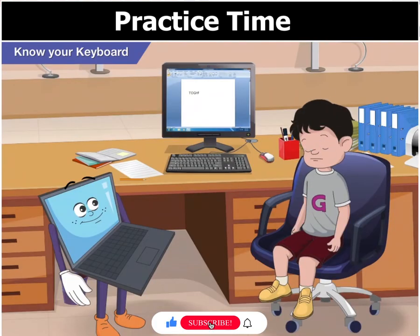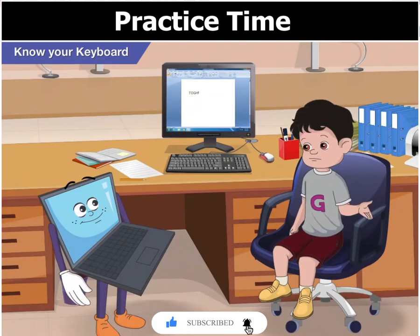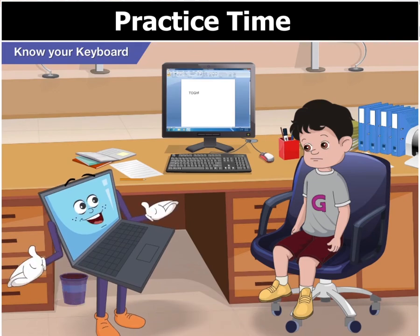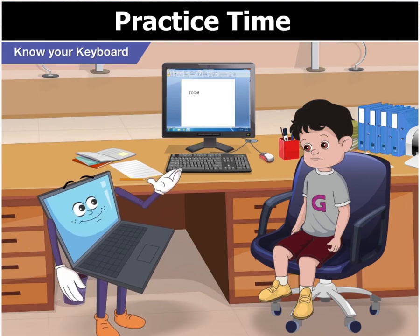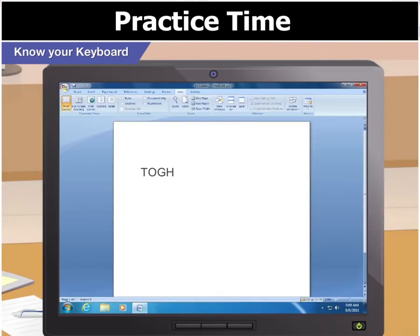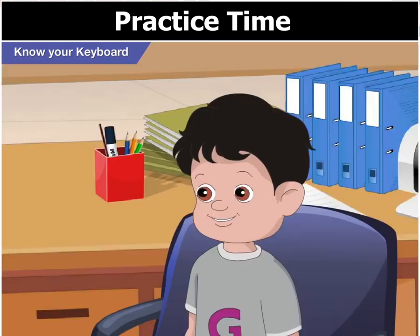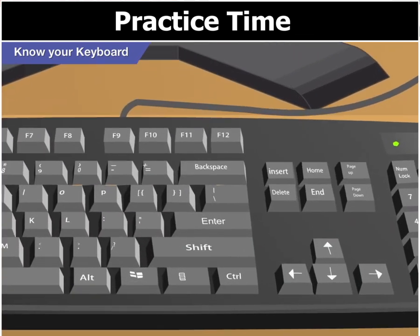Oh no! Toggle, I have typed an H instead of a G. What do I do now? No problem, Goggle. Use the backspace key to erase H and then type G. That's cool, Toggle! If you make a mistake, the backspace key and the delete key help you correct the mistake.